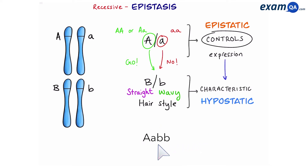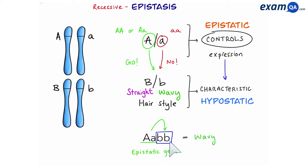What about this scenario? The epistatic gene is overall dominant, we read the next gene and that's overall recessive, so this person will have wavy hair.